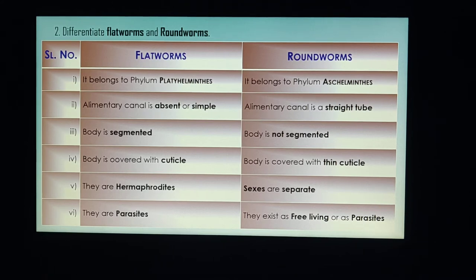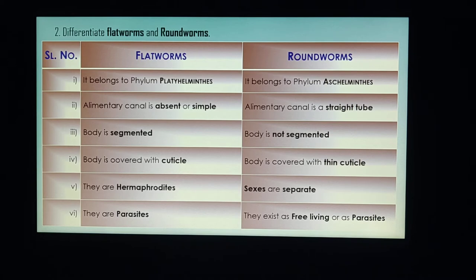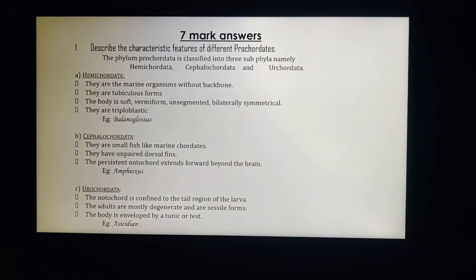All flat worms are parasites — they depend on other living organisms for their food. Round worms include both free-living and parasitic forms. Free-living ones feed on dead substances, whereas parasites depend on other living organisms, sometimes harming or killing them.